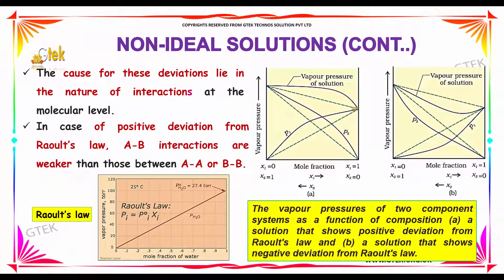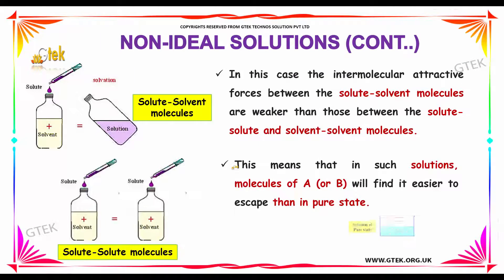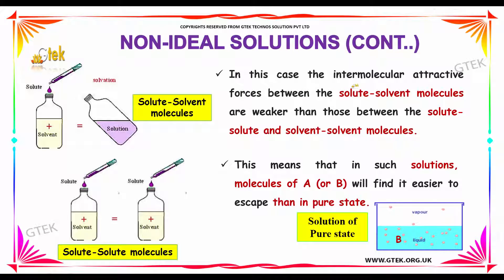The cause for this deviation lies in the nature of interactions at the molecular level. You can see P1 and P2 here. In case of positive deviation from Raoult's law, AB interactions are weaker than those of AA or BB. The intermolecular attractive forces between solute-solvent molecules are weaker than those between solute-solute and solvent-solvent molecules.